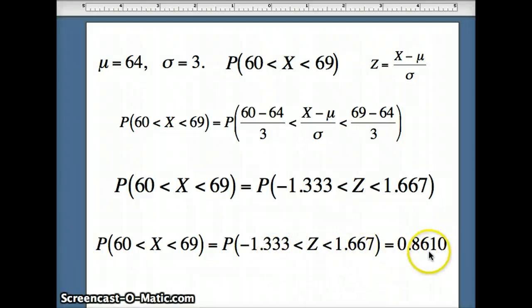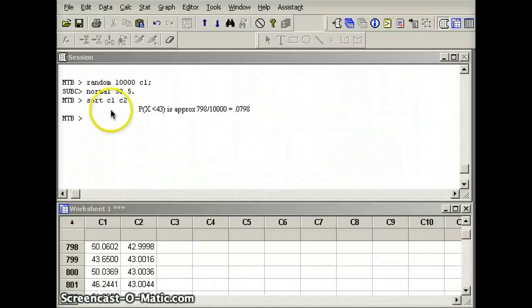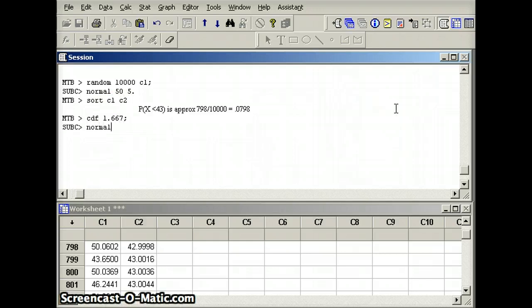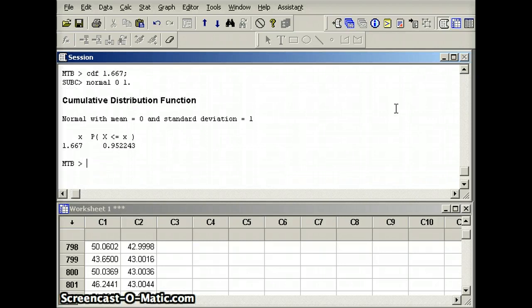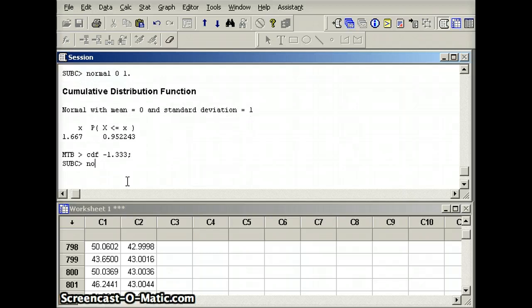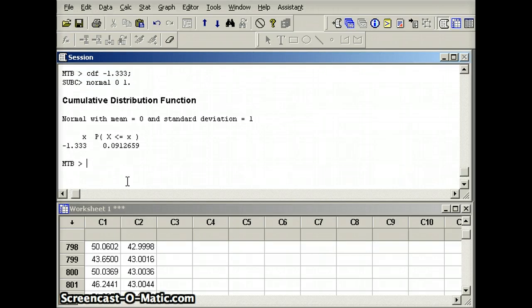Now I could also have determined that probability using Minitab. Let's quickly do that. So we're going to do CDF 1.667. And for emphasis, I'm going to say normal 01. And that gives me 0.952243. So that's how much is to the left of 1.667. But I've got to subtract off that part that's to the left of negative 1.333. So I'm then going to say CDF negative 1.333, semicolon normal 01. And what's that going to give me? That's going to give me 0.0912659.